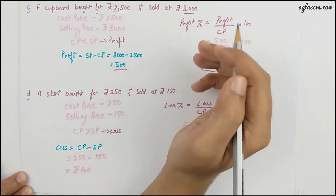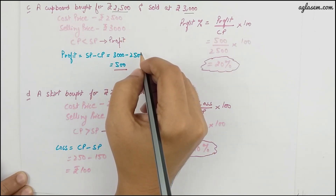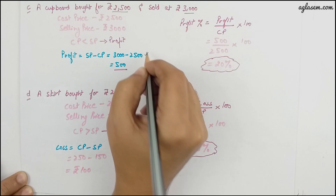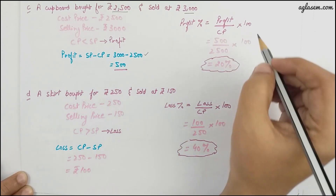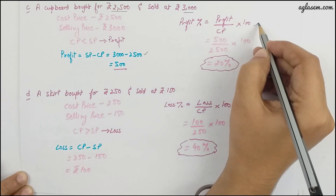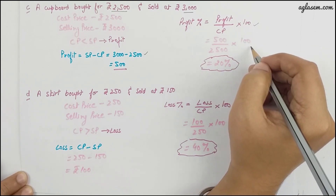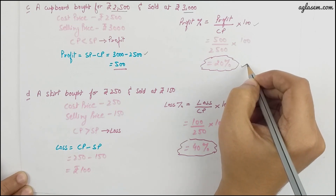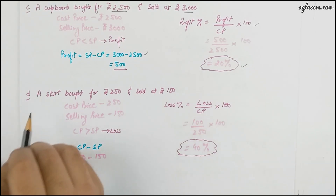Part (c): a cupboard bought for 2,500 has been sold at 3,000 rupees. Again sold at a price higher than the cost price, so profit is 3,000 minus 2,500, that is 500 rupees. Profit percent is 500 divided by 2,500 multiplied by 100, which comes to exactly 20 percent.